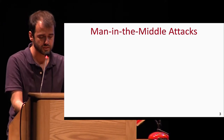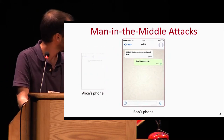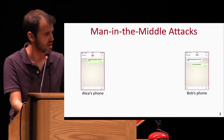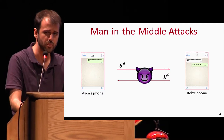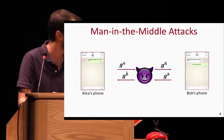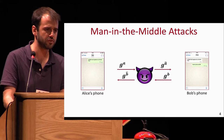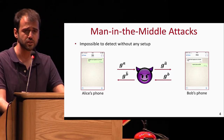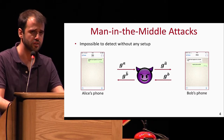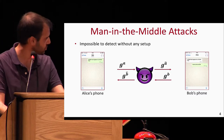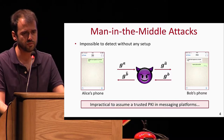Let's consider a concrete example. Say Alice and Bob want to chat for the first time over WhatsApp in an encrypted manner. What they first have to do is run some key exchange protocol — for example, the Diffie-Hellman protocol. Unfortunately, it is very well known that Diffie-Hellman becomes completely insecure when facing man-in-the-middle attacks, where an attacker can simply change the values sent by the users. More generally, it is impossible to detect such attacks in any key exchange protocol without some setup such as a trusted PKI, and it is impractical to assume a trusted PKI in messaging applications due to their very ad-hoc nature.